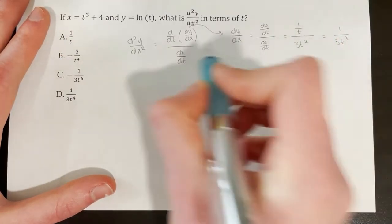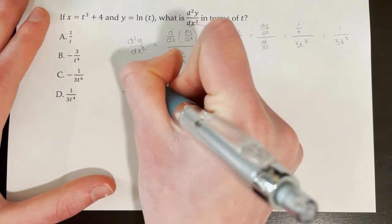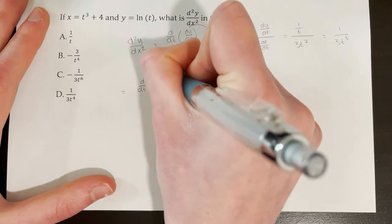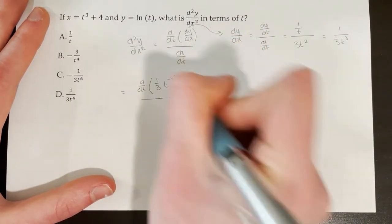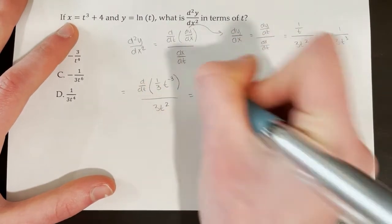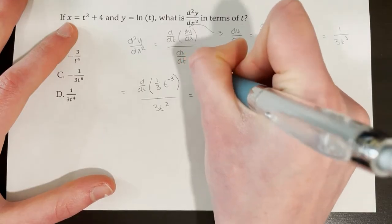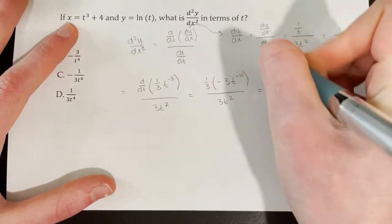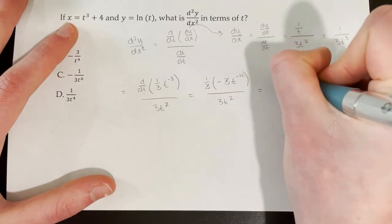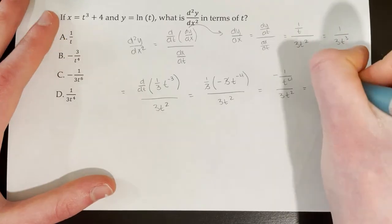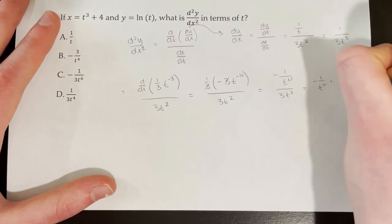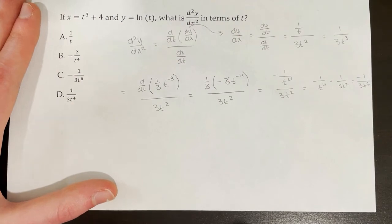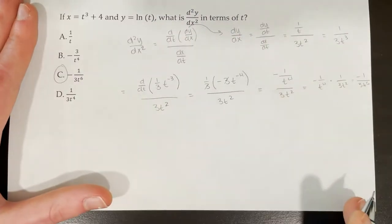We plug 1 over 3t cubed back in for dy dx, writing it as 1/3 times t to the negative 3 to make the power rule easier. That's all over dx dt, which is 3t squared. Taking the derivative of 1/3 t to the negative 3 gives 1/3 times negative 3t to the negative 4, all over 3t squared. The 3s cancel, giving negative 1 over t to the 4th over 3t squared, which simplifies to negative 1 over 3t to the 6th — matching answer choice C.